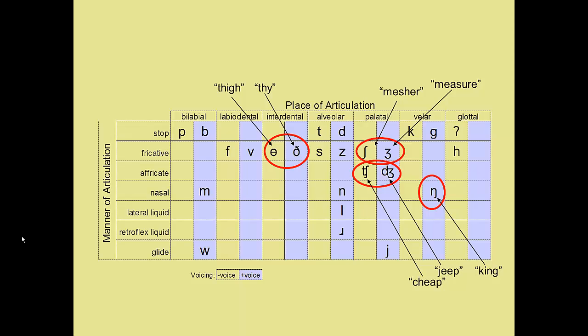The symbol engma is used to indicate the voiced velar nasal — the nasal consonant sound that we make at the end of a word like 'king.' It kind of looks like a combination of an n and a g. The retroflex liquid symbol looks like an upside-down r and is produced like an r, as in 'rare.' The voiced palatal glide — the sound at the beginning of the word 'yam' — looks like an English j. This will be easy to remember if you speak German; you'll see that letter at the beginning of the word 'jägermeister.'